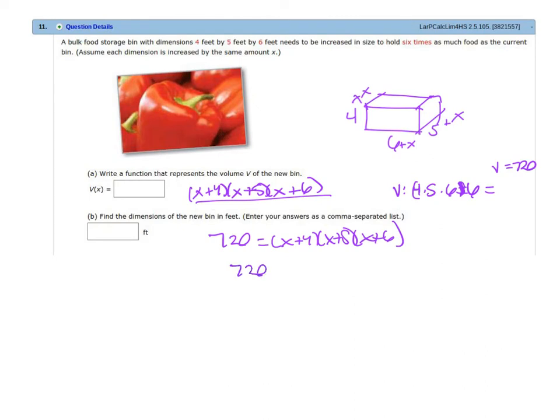So when you expand it, you get 720 equals x cubed plus 15 x squared plus 74 x plus 120. Then you set it equal to 0. So subtract 720 from both sides. So 0 equals x cubed plus 15 x squared plus 74 x plus 120 minus 720. Well, that's going to be negative 600.